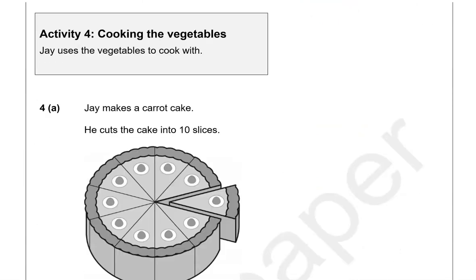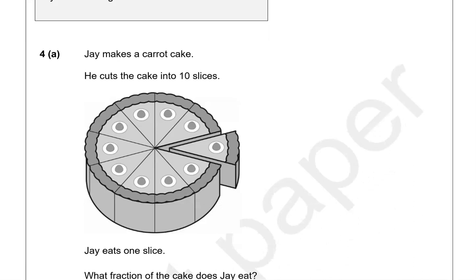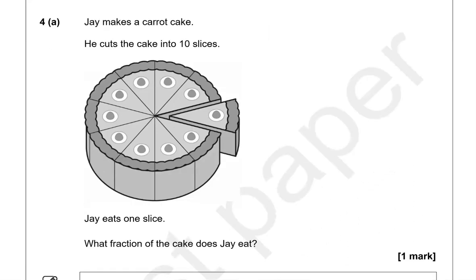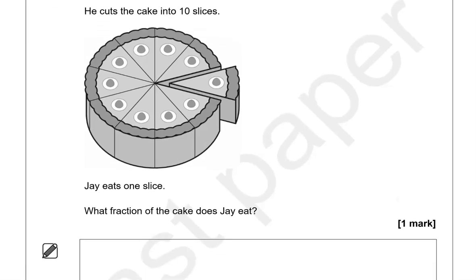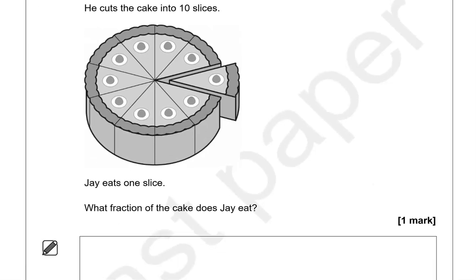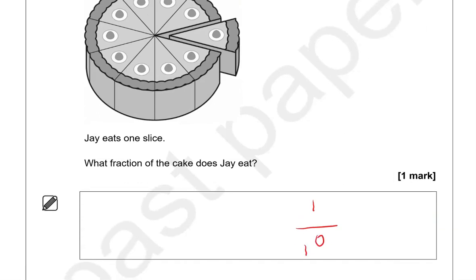Activity 4: Cooking the Vegetables. Jay uses the vegetables to cook with. Jay makes a carrot cake and cuts it into 10 slices. Jay eats one slice — what fraction of the cake does Jay eat? Jay eats one slice out of 10 total, so that is one tenth.